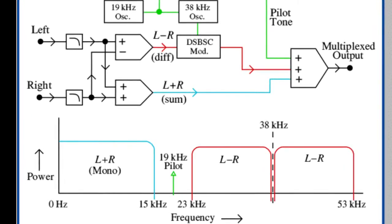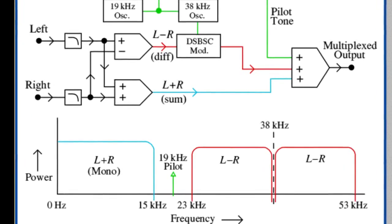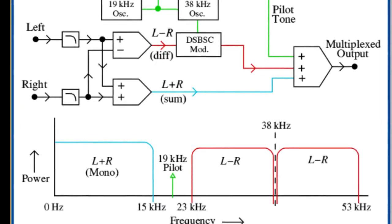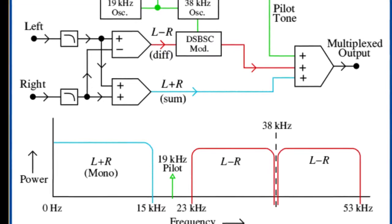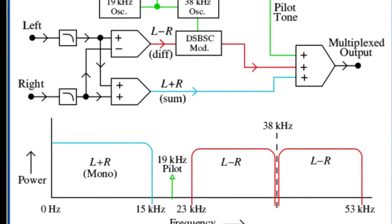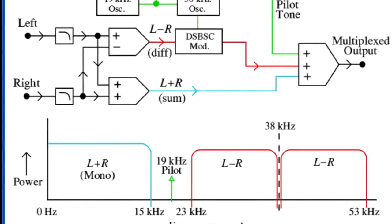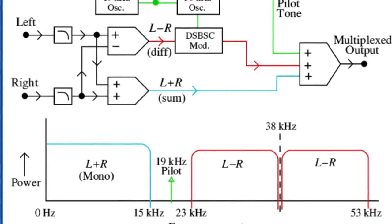An analog NTSC television channel is divided into subcarrier frequencies for video, color, and audio. DSL uses different frequencies for voice, and for upstream and downstream data transmission on the same conductors, which is also an example of frequency duplex.